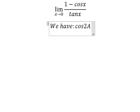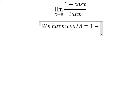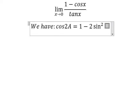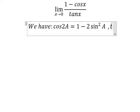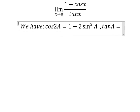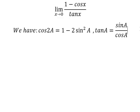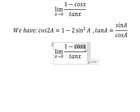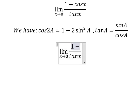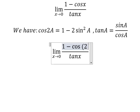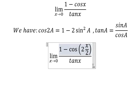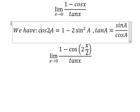We have: cos2A = 1 - 2sin²A and tanA = sinA/cosA. Now about cosx, that is about cosine of 2 multiplied by x/2. So capital A, that is x/2, and now we need to turn from this one into this one.